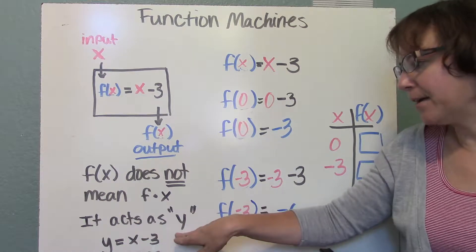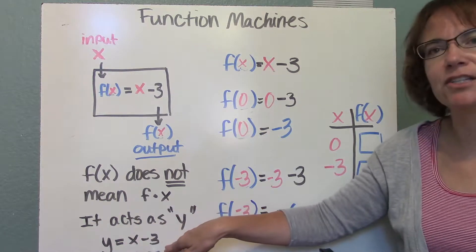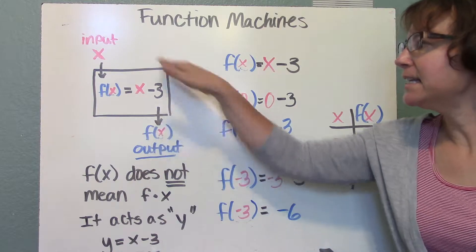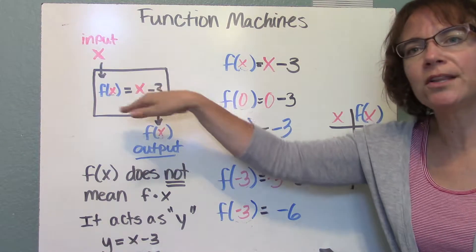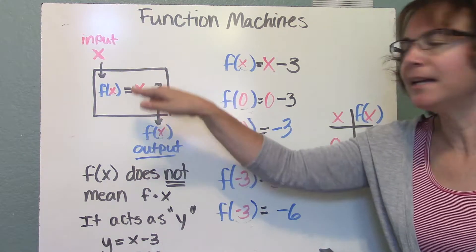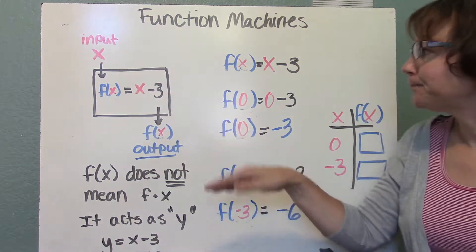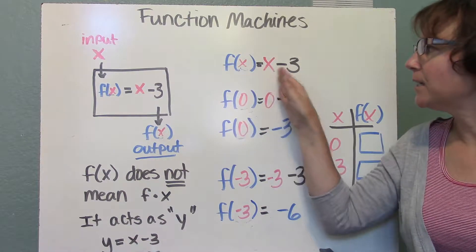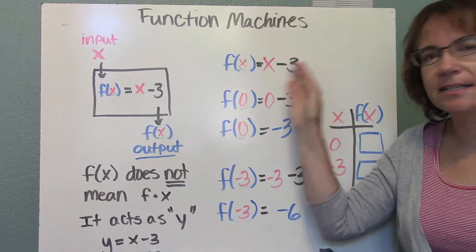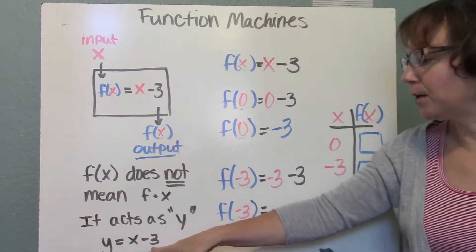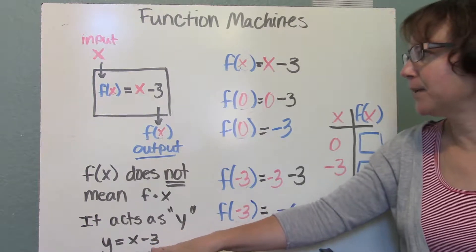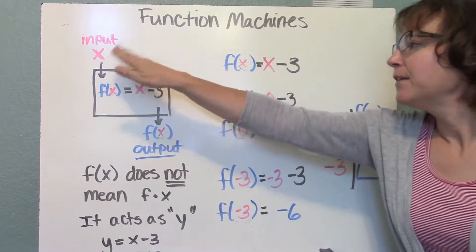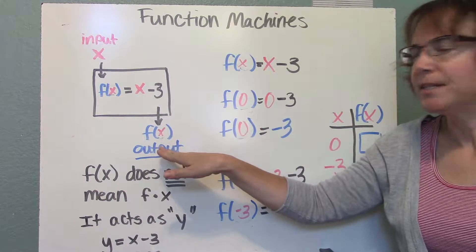So the y, when we have y equals x minus 3 — we've seen this before. We've seen this function rule thing happening, just not in this notation. So we can write it like f(x) equals x minus 3. That looks a lot like y equals x minus 3. Now we can put in an input, follow the rule, and get an output.